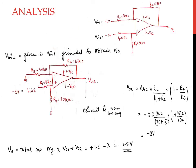Coming to the second part of the superposition theorem, we apply input Vin2 while Vin1 is grounded to obtain Vout2. The circuit is equivalent to a non-inverting amplifier and we obtain Vout2 equal to minus 3 volts. The total output voltage is the sum of the individual outputs Vout1 and Vout2, which equals minus 1.5 volts.